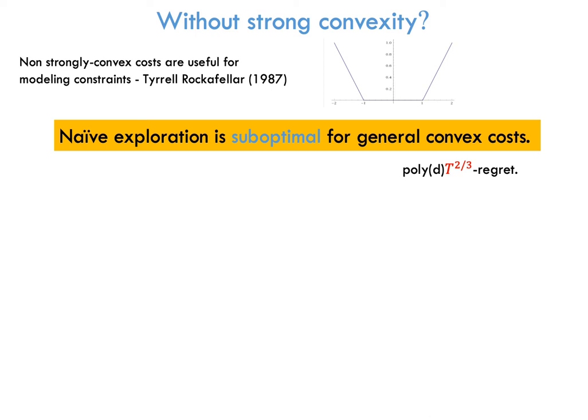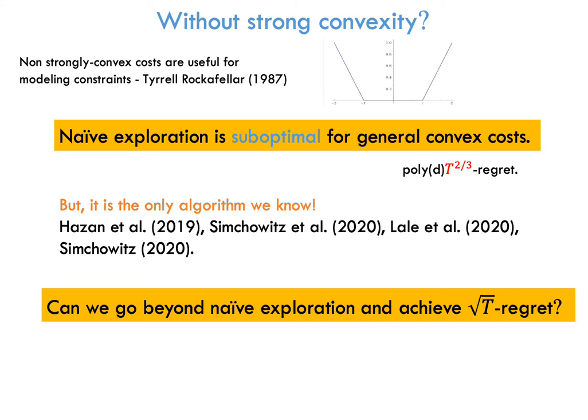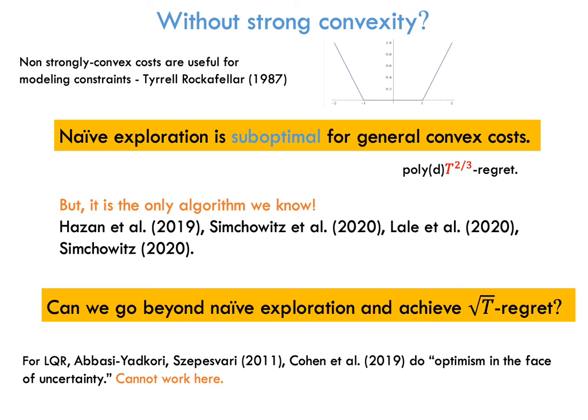Now, it can be shown that naive exploration is suboptimal for general convex costs, and gives t to the two-thirds regret. However, this is the only algorithm that we know for this problem. All the papers which go beyond LQR, and consider general convex costs, do exactly this. The question is, can we go beyond naive exploration, and achieve root-t regret?